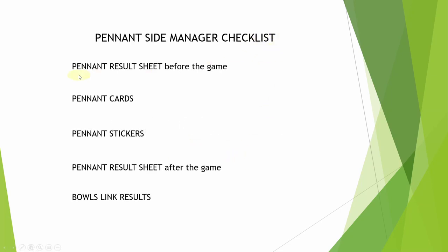Quick checklist: the pennant result sheet before the game is the home team's responsibility. Pennant cards — do the draw, then the away team puts their names against the home team. Pennant stickers — home team. Result sheet — make sure scores add up, make sure you sign it, tick the box if you're planning to protest. And Bowls link results — make sure the person responsible for entering those results actually gets the sheet.